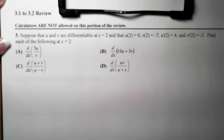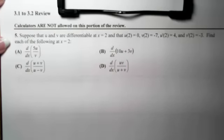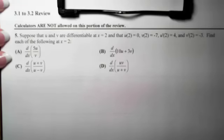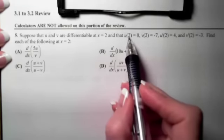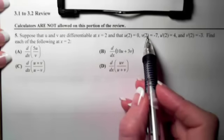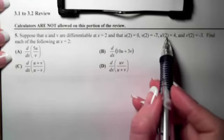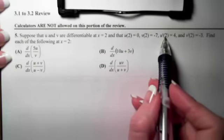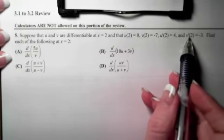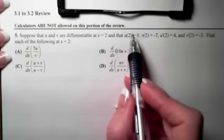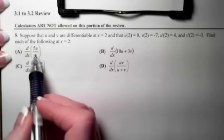Okay, 3-1 to 3-2 review. Calculators are not allowed, and this is number 5. In number 5, I've given you two functions, u and v, that are differentiable at 2. I've given you information about the output of u at 2, the output of v at 2, the slope of u at 2, and the slope of v at 2.